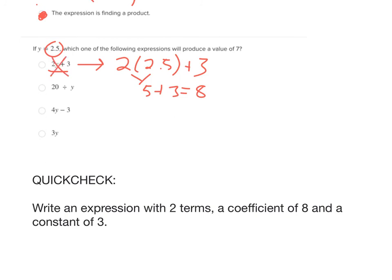So if y is 2.5, does 20 divided by that equal 7? 20 divided by 2.5. How many times does 2.5 go into 20? It's 8. You can check it on your calculator. 2.5 goes into 20 8 times. So that's not an answer.